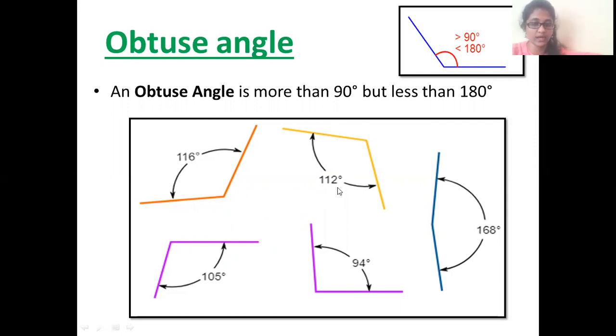Likewise, here you can see 112, 168, 94 and 105. So, all of them were more than 90 degrees but less than 180 degrees. Okay, so these can be categorized under obtuse angle.